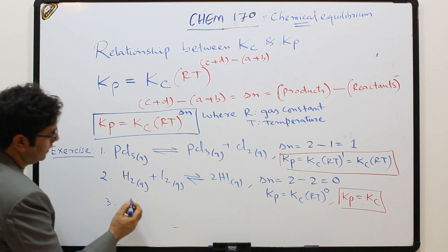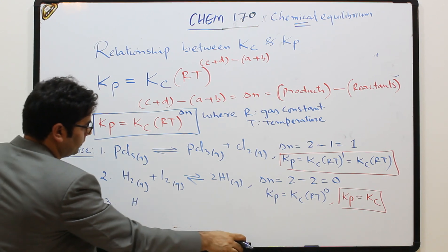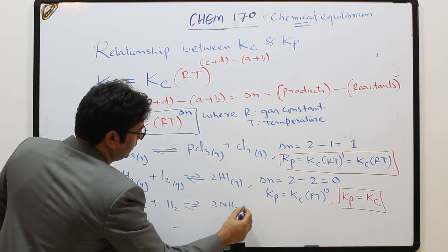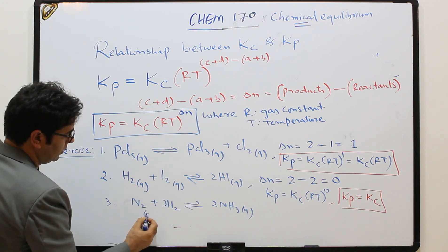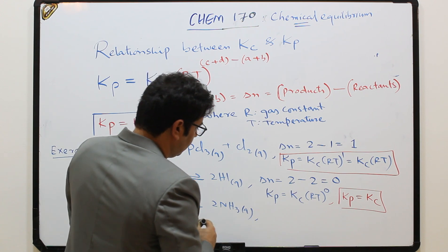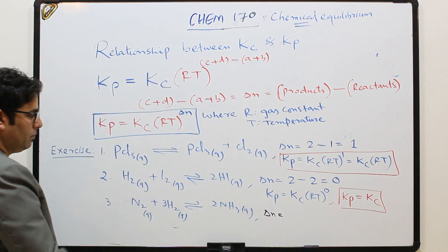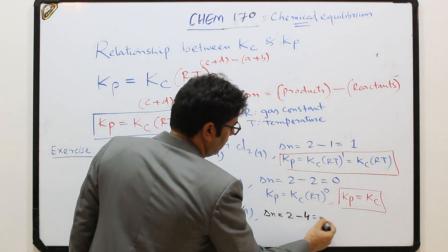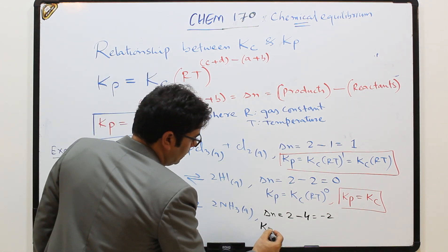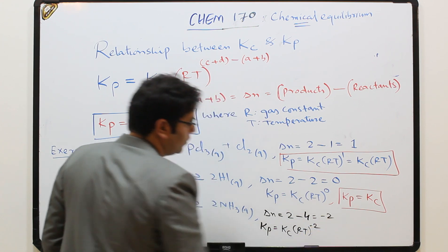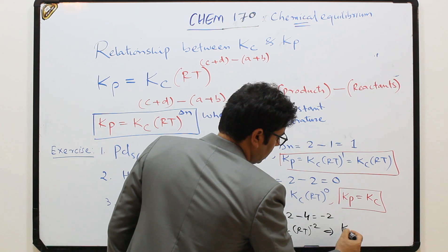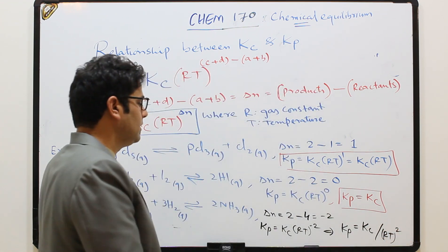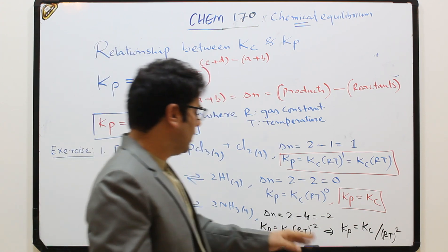Another example — formation of ammonia: N2(g) + 3H2(g) ⇌ 2NH3(g). ΔN = products minus reactants = 2 − (1 + 3) = 2 − 4 = −2. So Kp = Kc · (RT)^−2. We can also write this as Kp = Kc / (RT)^2, since the negative exponent moves it to the denominator.